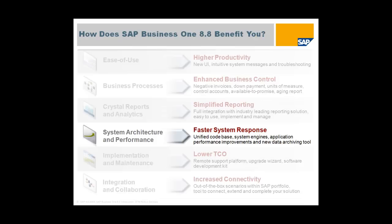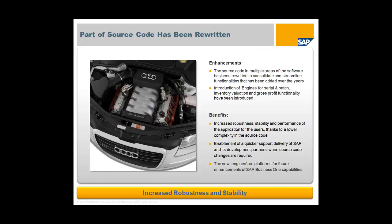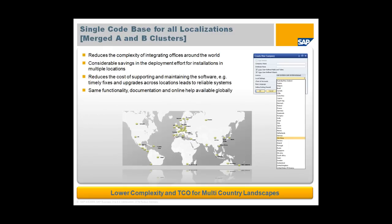On system architecture and performance, part of our source code has been rewritten. This delivers increased robustness, stability and performance of the application, thanks to lower complexity in our source code. It enables quicker support delivery from SAP and development partners where source code changes are required. We've also introduced engines for things like serial and batch numbering, inventory valuation and gross profit functionality — providing a platform for future enhancements of SAP Business One capabilities more quickly and more easily than ever before.